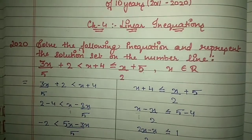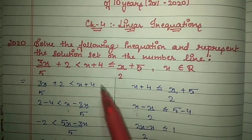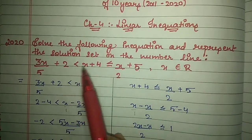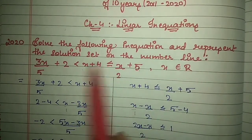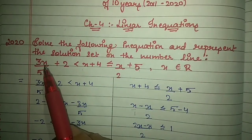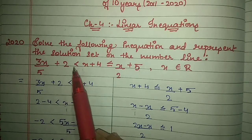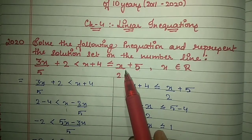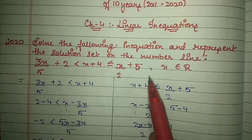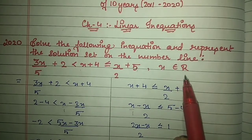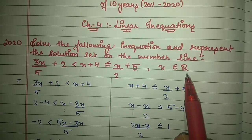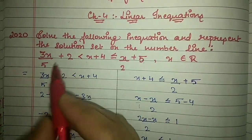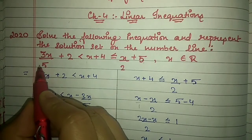First, the 2020 question: solve the following inequation and represent the solution set on the number line. The inequation is 3x/5 + 2 < x + 4 ≤ x/2 + 5, where x belongs to real numbers.